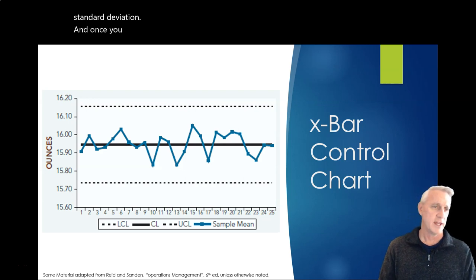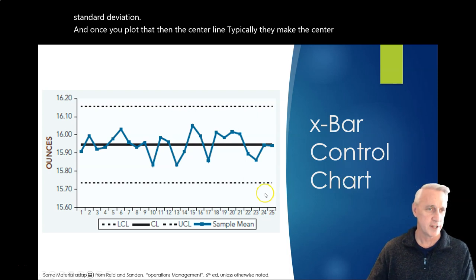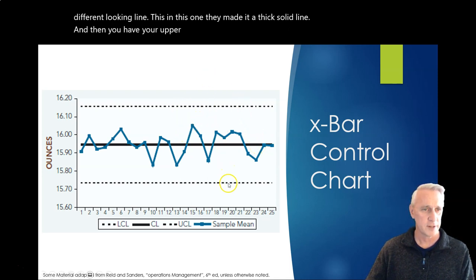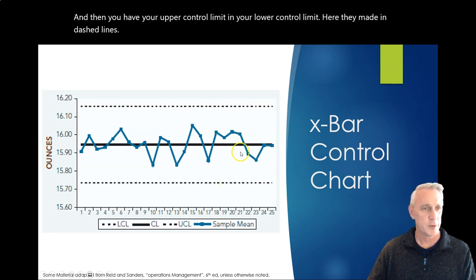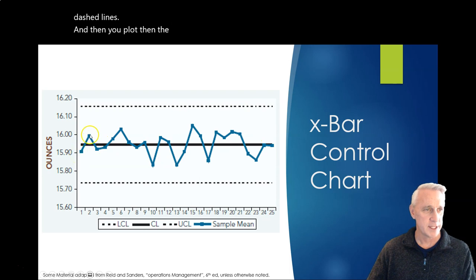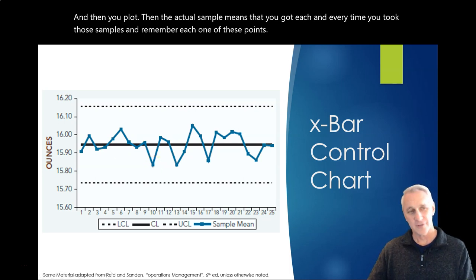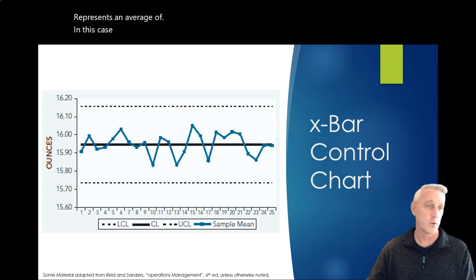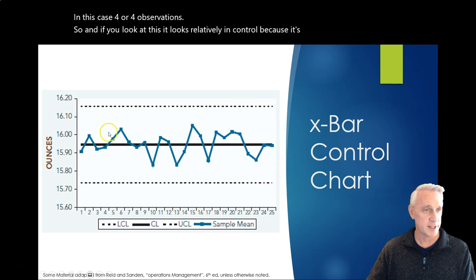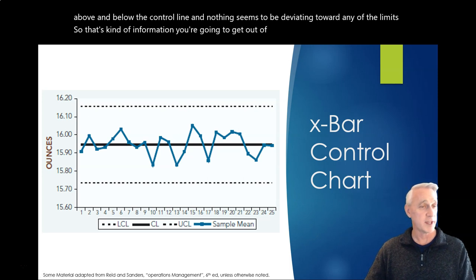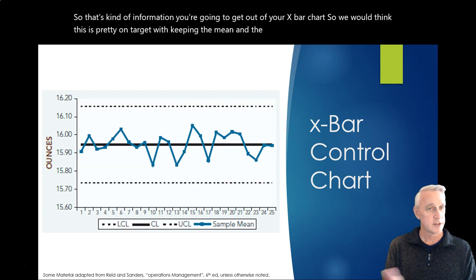And, once you plot that, then the center line, typically they make the center line a different looking line. In this one, they made a thick solid line. And then you have your upper control limit and your lower control limit. Here they made it in dashed lines. And then you plot the actual sample means that you got each and every time you took those samples. And remember, each one of these points represents an average of, in this case, four observations. So, and if you look at this, it looks relatively in control because it's kind of equally balanced above and below the control line and nothing seems to be deviating toward any of the limits. So, that's kind of information you're going to get out of your X-bar chart. So, we would think this is pretty on target with keeping the mean and the mean's not slipping too far off from our target.